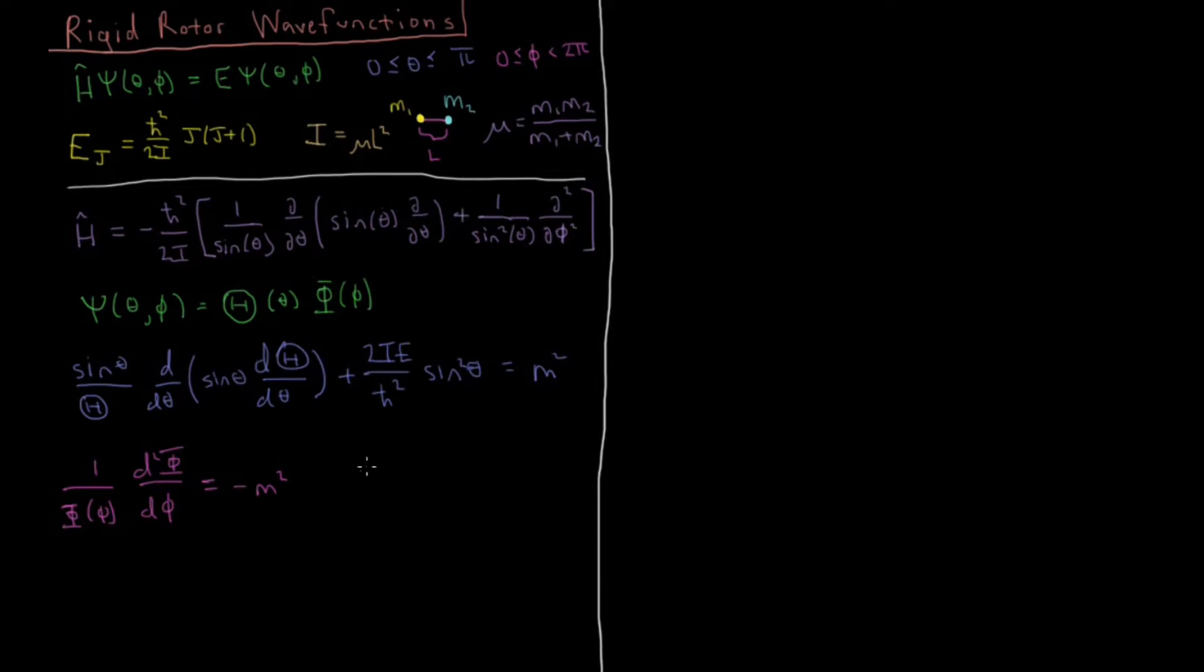And then again, important to note the fact that phi of phi plus 2 pi is just equal to phi of phi again. It's a repeating boundary condition, a periodic function.